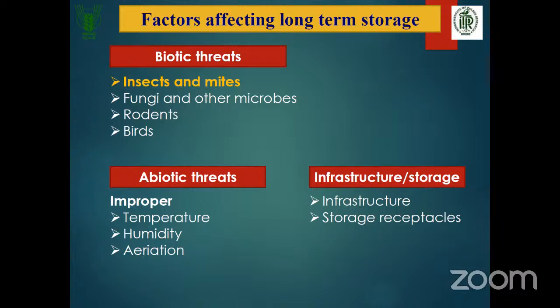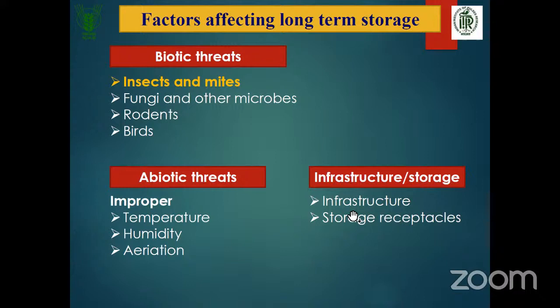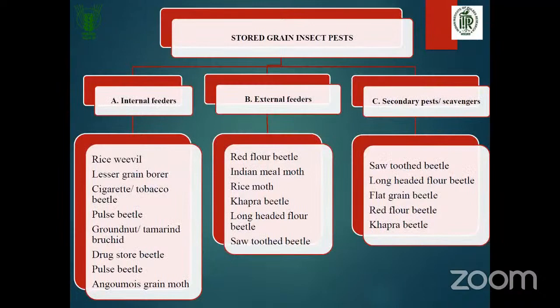Infrastructure and storage factors include wall structure, ceiling, aeration, roof structures, and wooden structures used for stacking bags. You should also highlight storage receptacles — meaning bags, bins, or other storage structures used. These are the factors to highlight based on the marks allocated to the question.